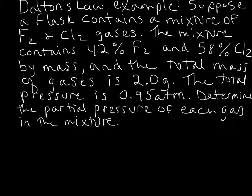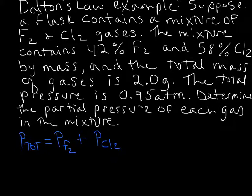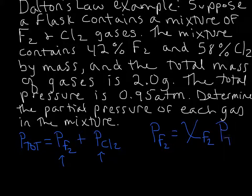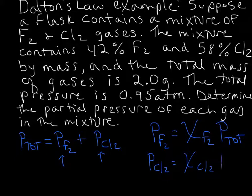Let's remind ourselves of a few things about Dalton's Law. The total pressure is equal to each of those partial pressures added together. So the total pressure in the mixture is equal to the partial pressure of fluorine gas plus the partial pressure of chlorine gas. The other thing to keep in mind is that each partial pressure is equal to the mole fraction of that gas in the mixture times the total pressure. We can write that down for chlorine as well.